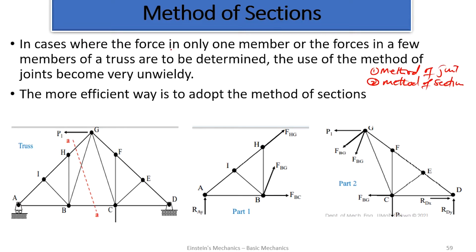In cases where the force in only one member or the forces in just a few members of a truss need to be found, the use of the method of joints becomes very unwieldy. A more appropriate method is the method of sections if we want to determine the force in one member or just a few members.